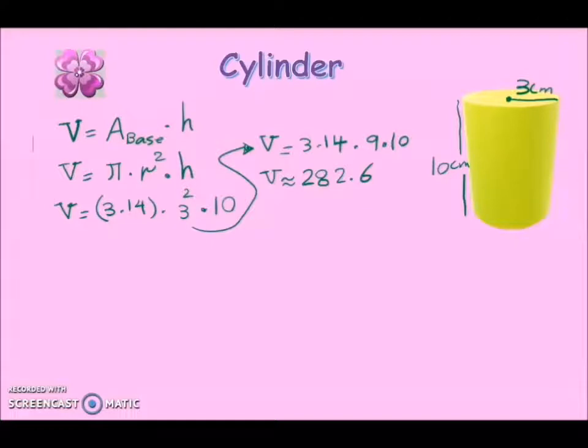And what's the unit? Because we have three dimensions, our unit is centimeter, but three dimension you have to raise it to 3. It means cubed. So therefore the volume of this cylinder is 282.6 cubic centimeters.